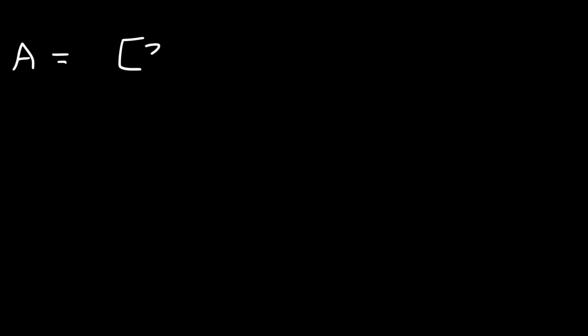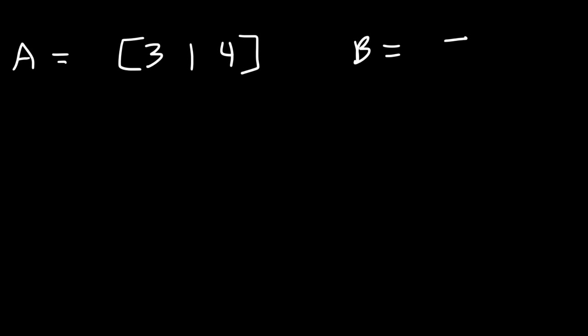In this video we're going to talk about how to multiply matrices together. So let's say we're given matrix A which is 3, 1, 4 and we're going to multiply that by matrix B which is 4, 2, 6, 3, 5, 8.